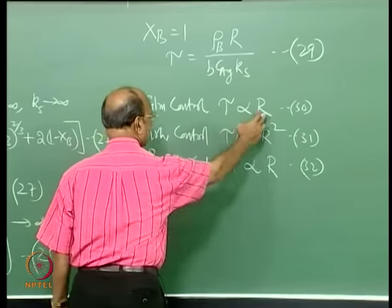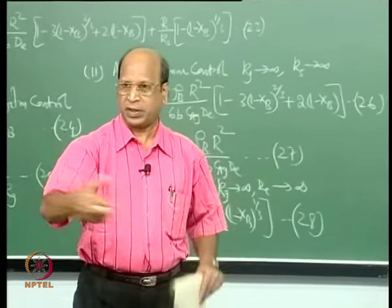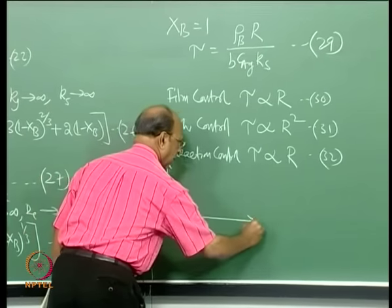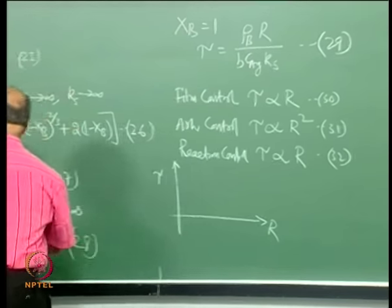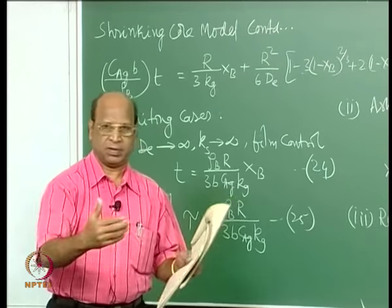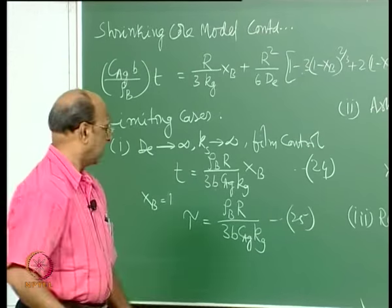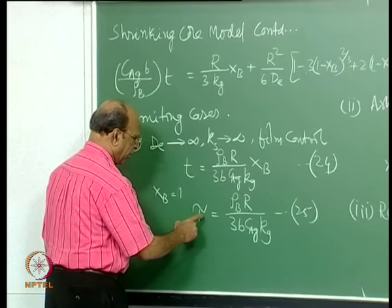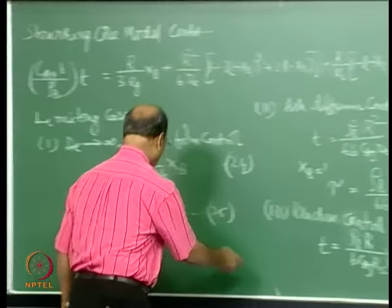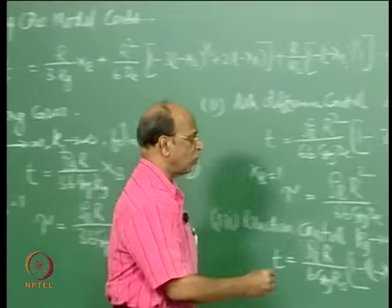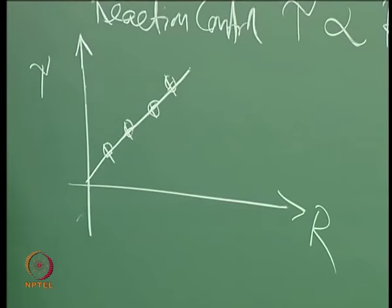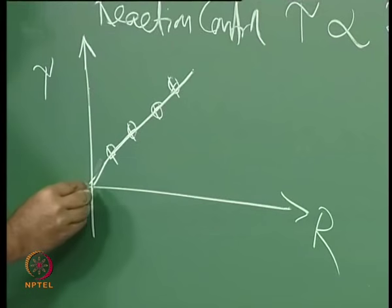Now if I plot tau versus R for different particle sizes — 1 mm, 5 mm, 10 mm, 20 mm — and if film control is valid, K_G is constant because I use the same flow conditions and temperature. I plot tau versus R, and if it goes through the origin as a straight line, this confirms film control, and the slope gives information about K_G.